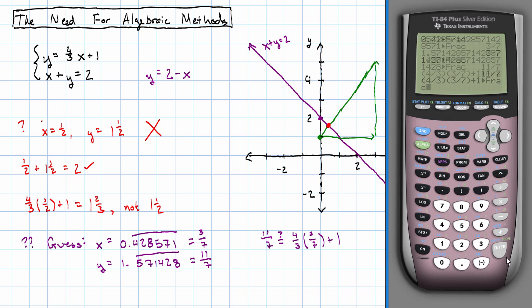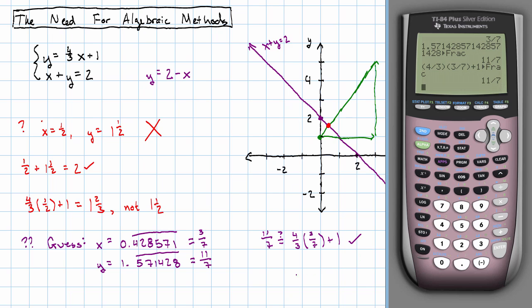Make it a fraction. Oh, yeah. That works. And then, 3 sevenths plus 11 sevenths. Yeah, that's going to be 14 sevenths, which is 2.